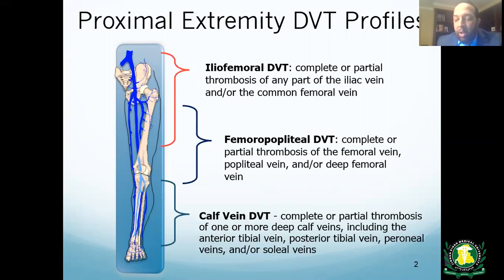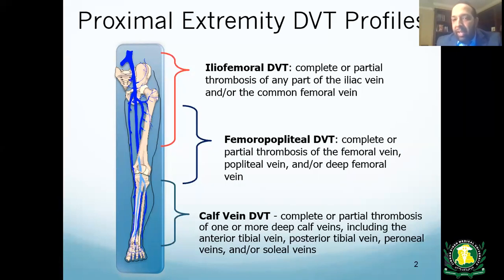Femoral-popliteal DVTs refer to clots after the common femoral vein, where the veins branch into the deep profunda vein and the femoral vein. The femoral vein was previously misclassified as the 'superficial femoral vein' because the artery is called the superficial femoral artery, but that nomenclature was changed since it is actually a deep vein. The femoral vein, popliteal vein, or deep femoral vein falls under the classification of femoral-popliteal DVT.